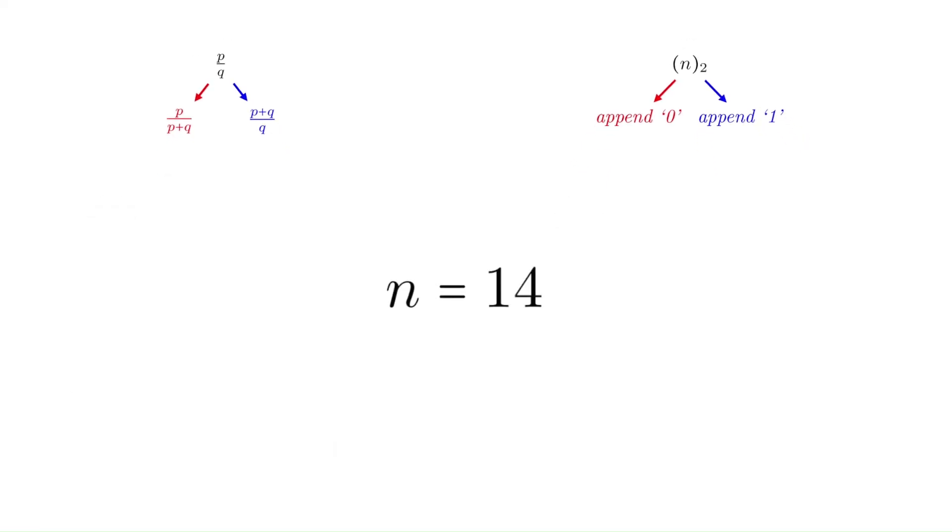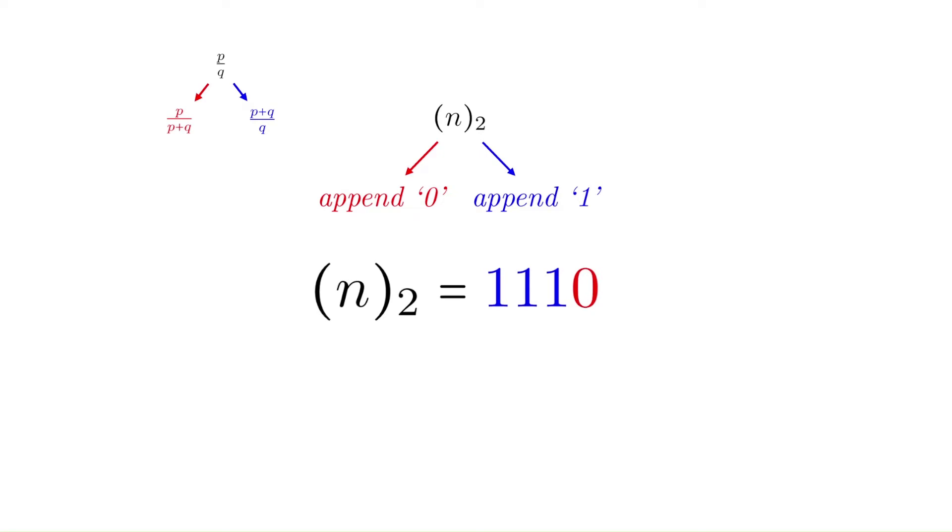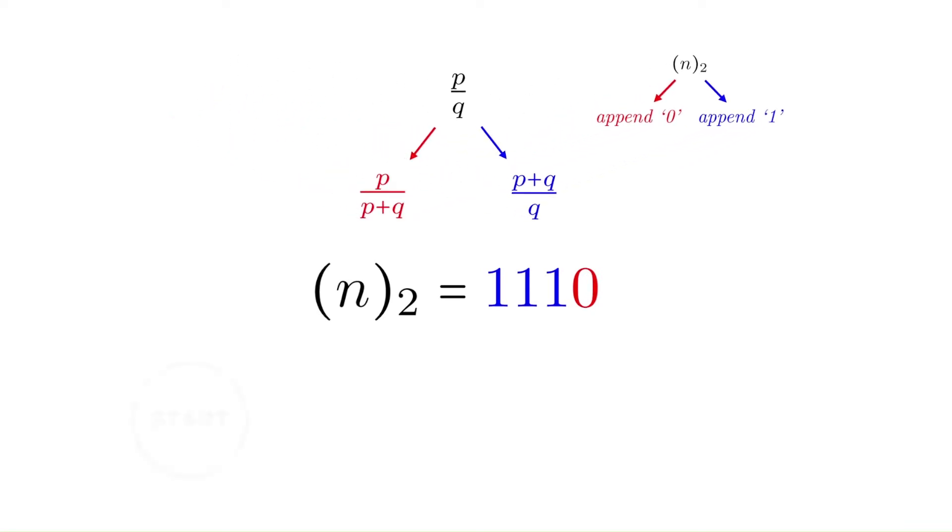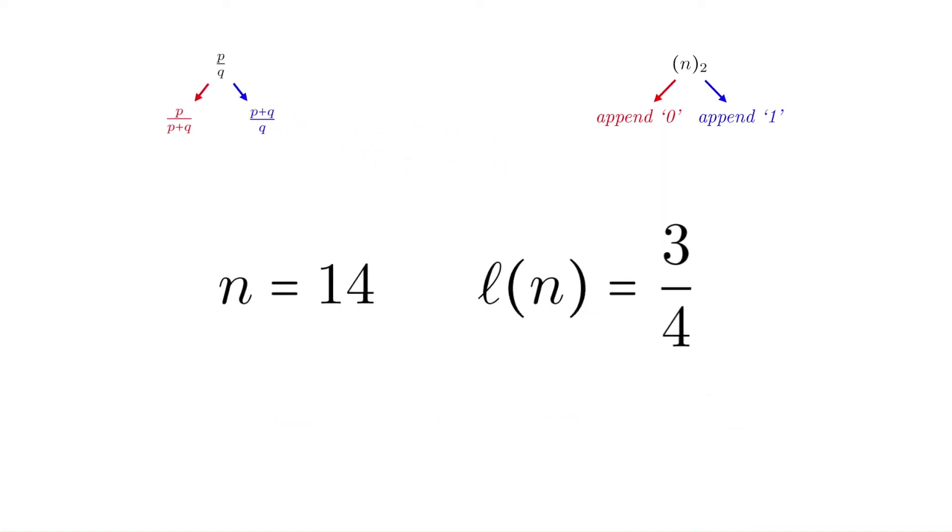Let's use the same example, n equals 14. We write 14 in binary, and then we use the n-tree rules to determine when to go left and right. Finally, we apply the left and right rules from the start token, first to 1 over 1, then the right rule twice more, and finally the left rule to get to 3 over 4, and this is the 14th fraction in the sequence.